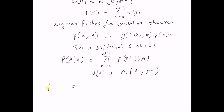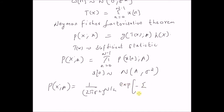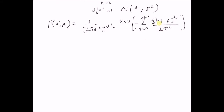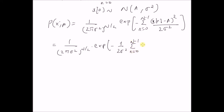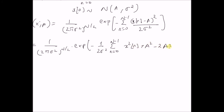Using that information, the probability distribution p(x; a) is equal to 1 over (2 pi sigma squared) to the power N/2, multiplied by the exponential of minus 1 over 2 sigma squared. Expanding the quadratic term in the exponent, we have the sum from n equal to 0 to N minus 1 of x squared(n) plus a squared minus 2 times a times x(n).